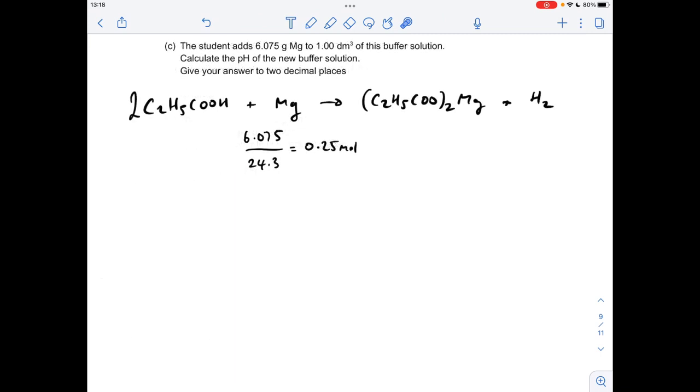OK, so we'll move on to part C. It's not easy, this. If you get this bit right, you're doing really well. Probably one of the hardest buffer questions I've seen. Right, so we're told the student adds this many grams of magnesium to one decimeter cube of the buffer.